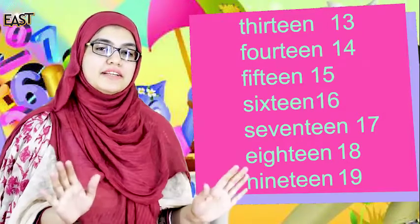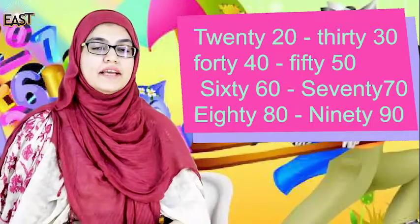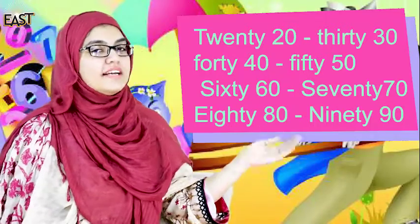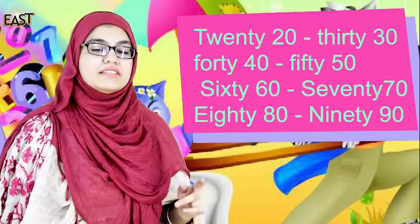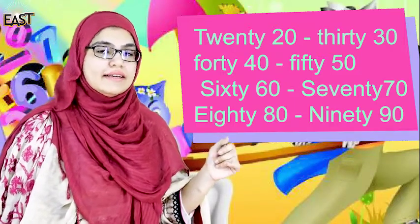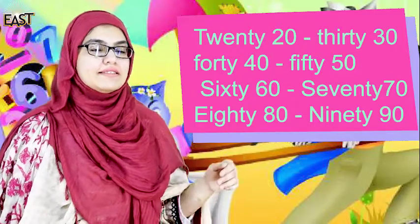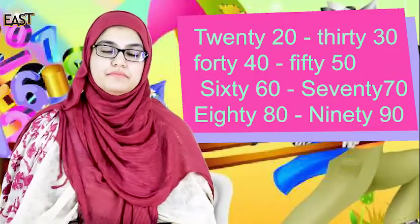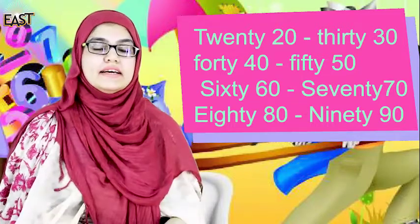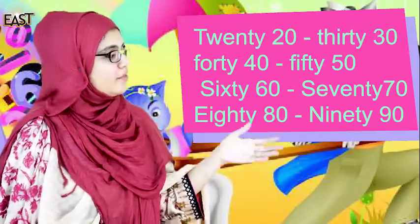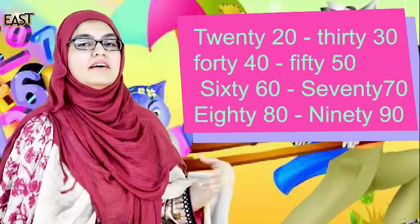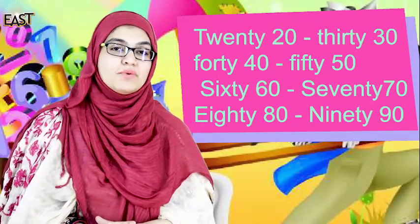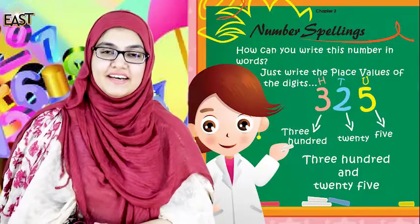19 के बाद यह pattern stop हो जाता है और फिर दूसरे patterns आते हैं जो हमें अलग से करने हैं। वो कौन से हैं? 20, 30, 40 — T-Y का pattern जो सब के साथ आता है — 60, 70, 80, 90 तक। इसी तरह से हमें spellings को याद करना है। जब हम spellings याद करेंगे तो thousands आगे की values को अच्छे से समझ और सीख पाएंगे। क्या आपको आगे सीखना है? Yes — very good!